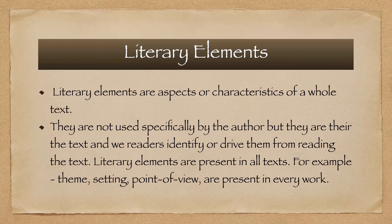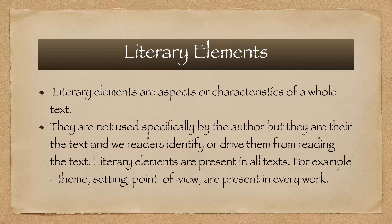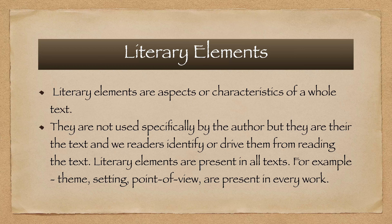Now let's move to the second element, which is literary elements. Literary elements are aspects or characteristics of a whole text. They are not used specifically or specially by the author, but they are there in the text and we as readers identify or derive them from reading the text. Literary elements are present in all texts. For example, theme, setting, point of view — these are present in every text, in every work which we read, and we can find or identify them very easily, and these are important for the work.